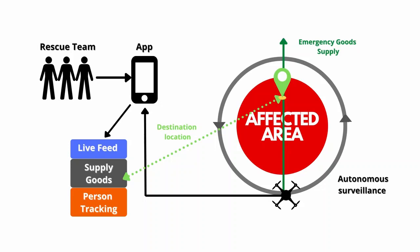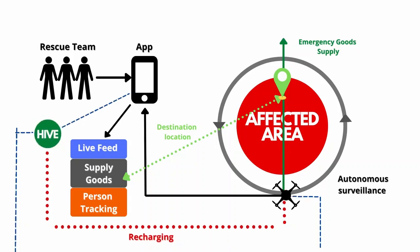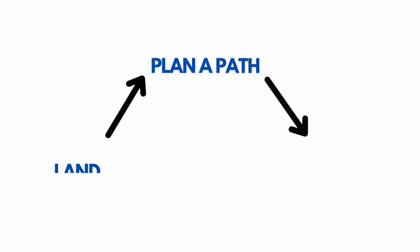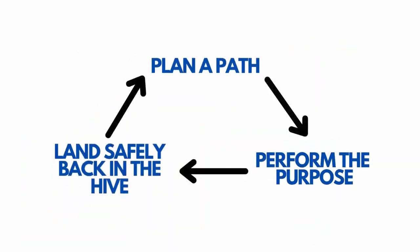The user can track a person or an object from the live feed. Rapid recharging is done in the Hive using charging docks. Hive also acts as a central processing unit to communicate with the drone and the mobile application. Plan a path, perform the purpose, and land safely back in the Hive.